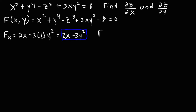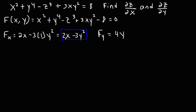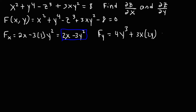Now let's find the partial derivative with respect to y. The derivative of y to the fourth is 4y cubed. The derivative of the other terms — we're going to treat them as constants, so they're going to be 0. For the 3xy² term, we treat the 3x part as a constant but take the derivative of y squared, which is 2y. So this gives us 4y cubed plus 6xy.